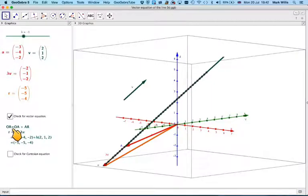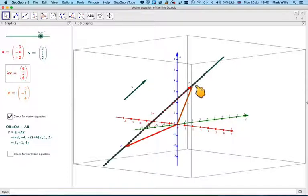OR is equal to OA plus AR. So let's just move this so it's positive before we explain that. The vector O to R is the same as going O to A plus A to R.